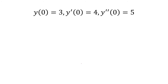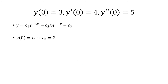Now we want to use the initial conditions. Starting with y of zero equals 3, we let x equal zero. This term becomes zero, and e to the zero is just 1, so we have c1 times 1, and we also have c3. That equals 3.